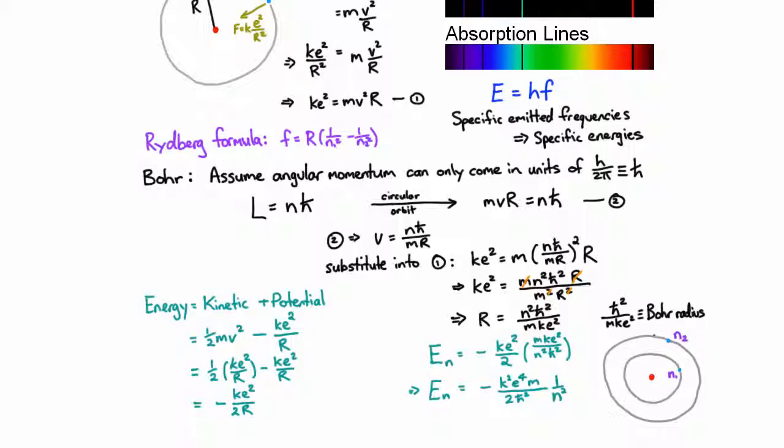And so what Bohr said was that this electron can't just emit radiation and decay, because it can only be in these particular levels. And so in order to emit a photon, it has to make a transition from one level to another level. And when it does that, it's going to change its energy in a very discrete amount, the difference between En2 and En1. And when it does that, it's going to emit a photon with that energy.